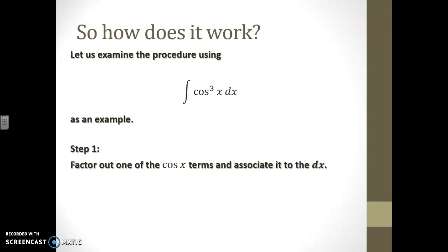First and foremost, we will take one of the cos x terms and move it in order to associate it to the dx. Basically we're just breaking up the three powers of cosine into cos squared and cos of x along with the dx.